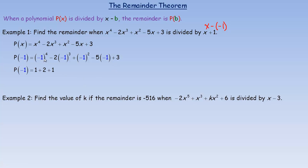Negative 1 to the fourth is 1. Negative 1 cubed is negative 1, times negative 2 is plus 2. Negative 1 squared is 1. Negative 1 times 5 is plus 5, and we have plus 3 on the end. Adding all this up: 3 and 5 is 8, then 9, 10, and 2 makes 12. So the remainder is 12.